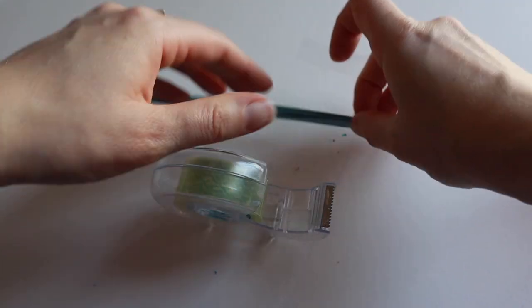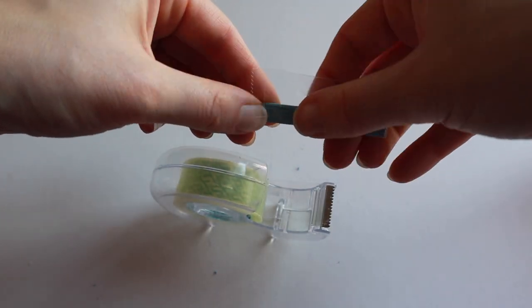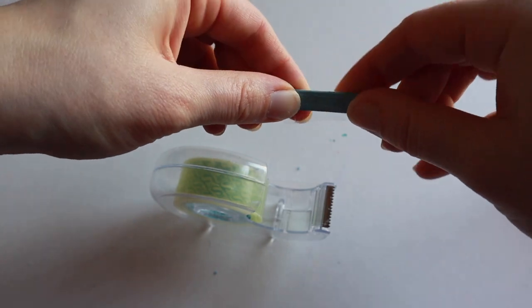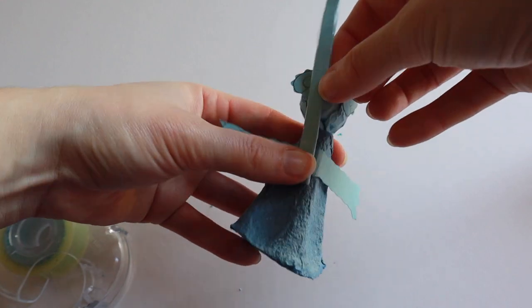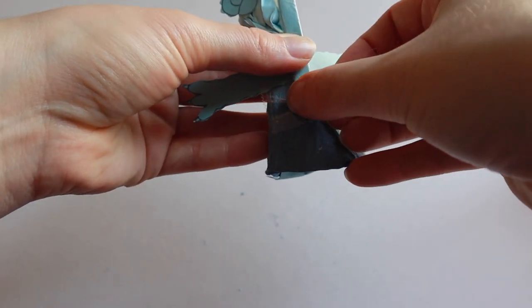Cover the whole stick with tape in the same way. Now we need to attach our rod to our character. Turn your character over and put a strip of tape over the back of the body and head.